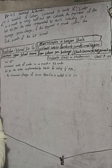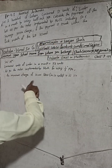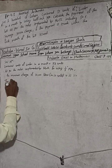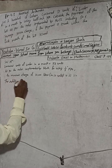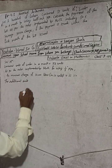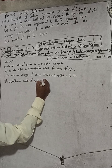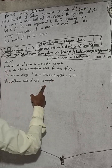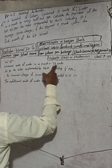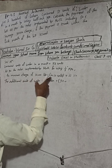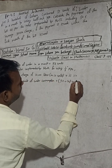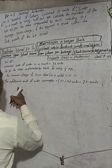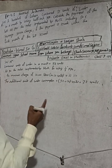Now, the additional units of water consumption is equal to: total units consumed is 32, and we subtract the minimum 10 units. So 32 minus 10 equals 22 units. You get 22 additional units of water consumption.